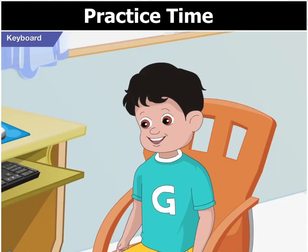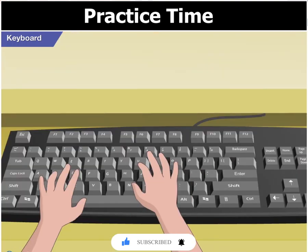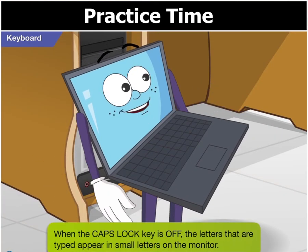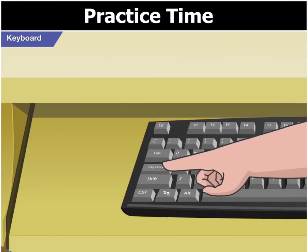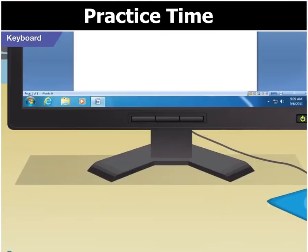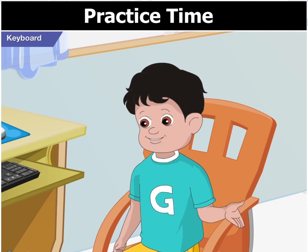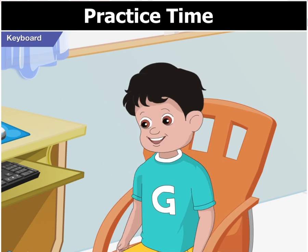So if I type the word mouse with the key on, will all its letters appear in capitals? Yes, Goggle. But when the caps lock key is off, the letters that are typed appear in small letters. Look, I have typed the word printer after pressing the caps lock key again, and now all its letters have appeared in lower case.